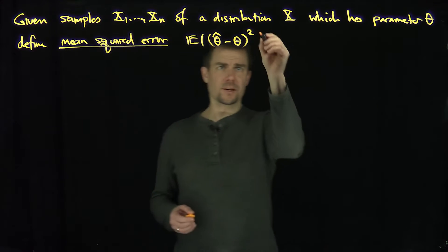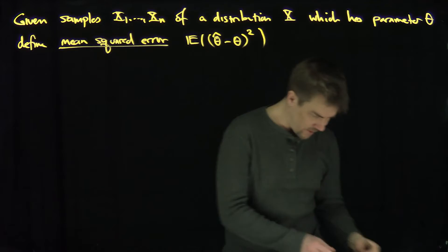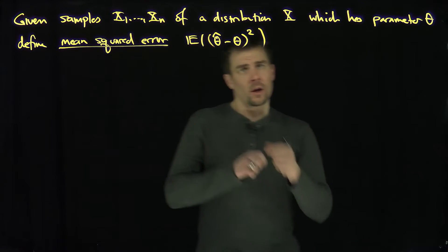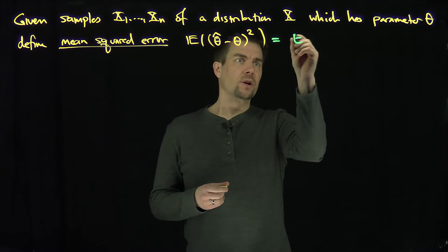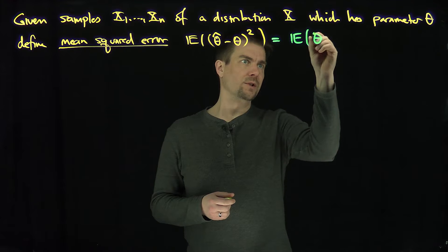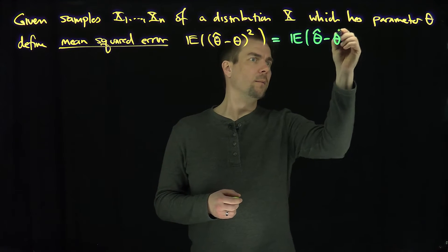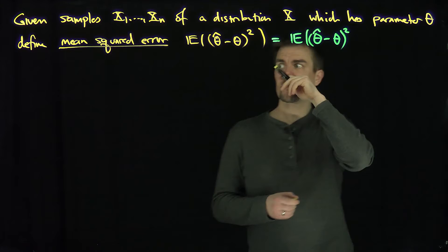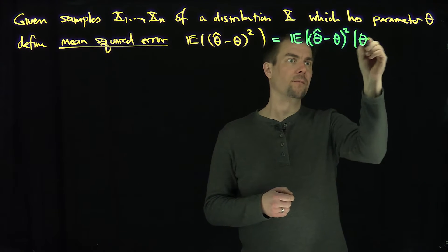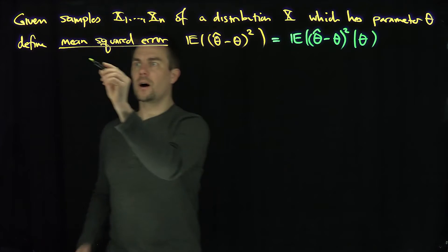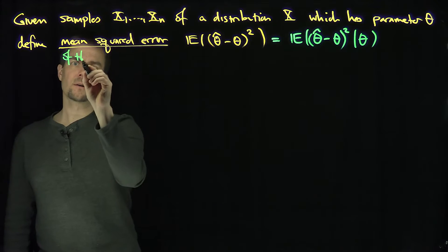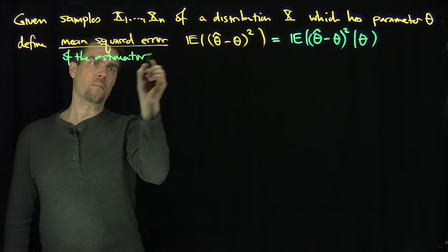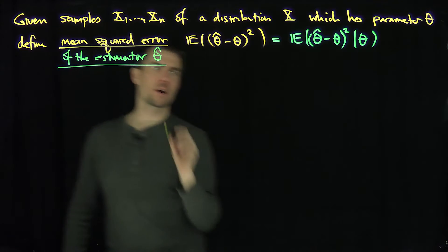Typically what you're going to see is this is assuming you're doing this calculation assuming that you know theta. We're going to suppress this notation. In other words, this is the expected value of theta-hat minus theta, squared, given theta. This is the mean squared error of the estimator theta-hat.